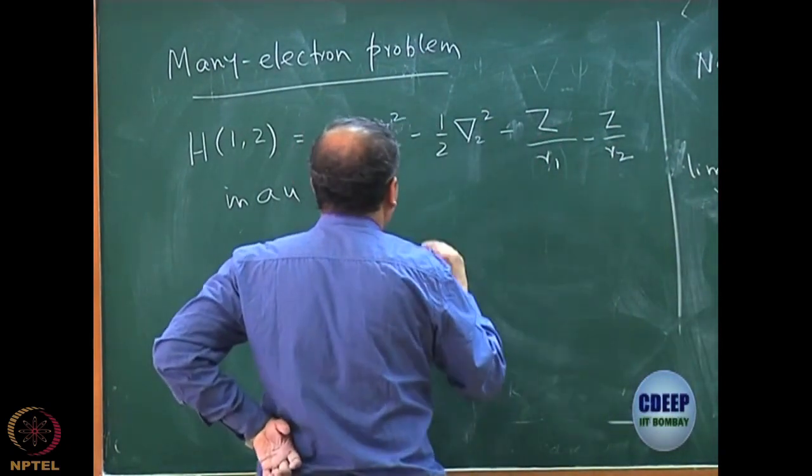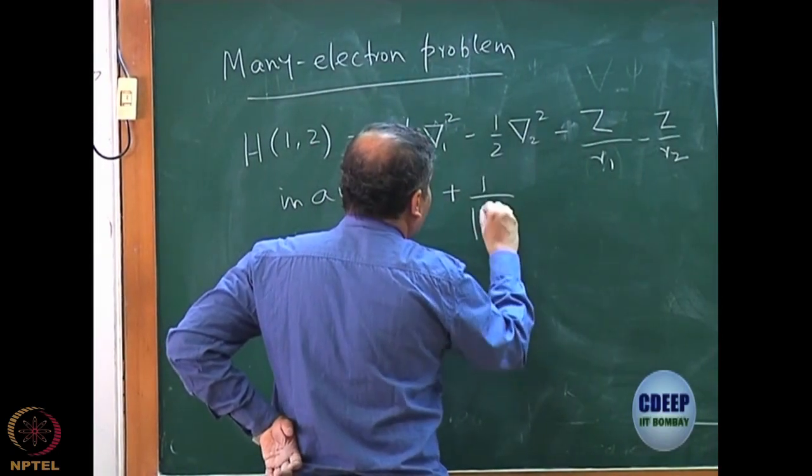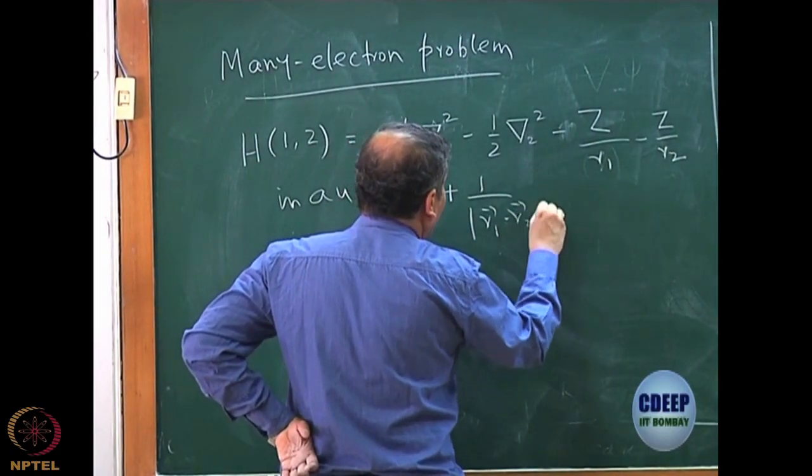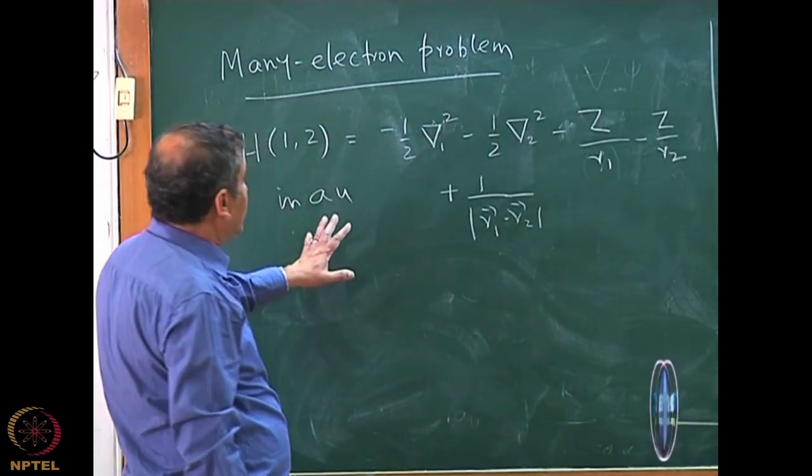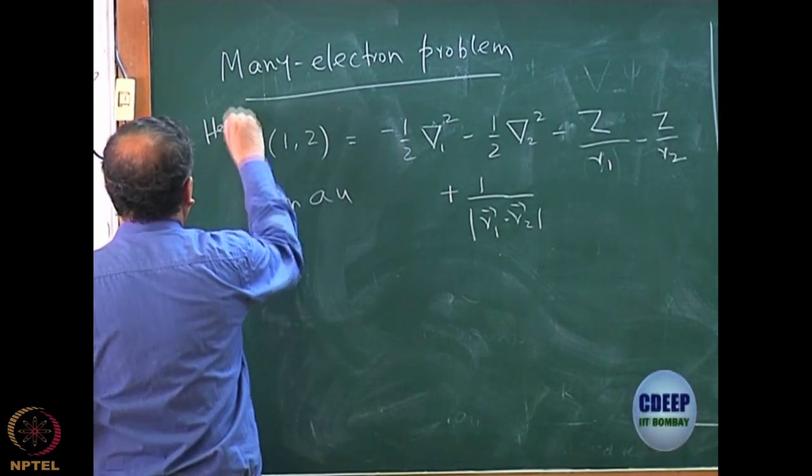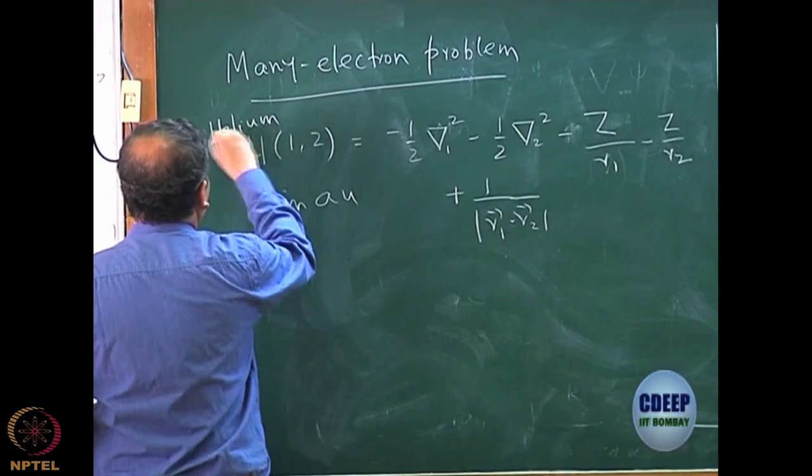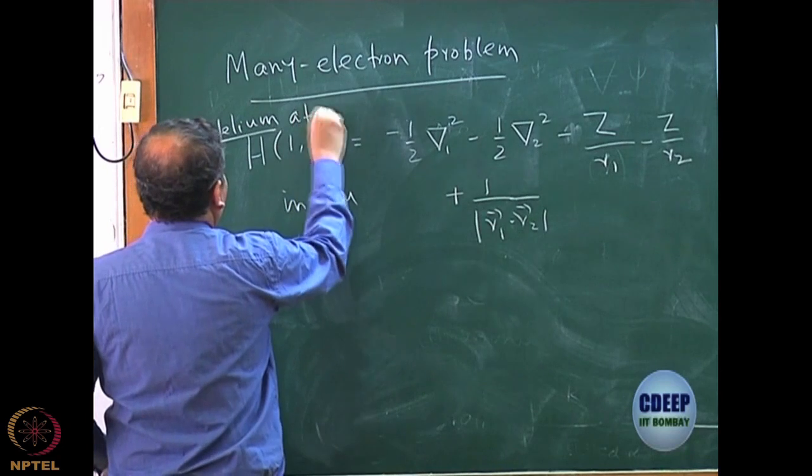R1 and R2 are distances, plus 1 by modulus R1 minus R2. We noted this is for the helium atom, in particular for helium atom, but in general we can write for any molecule.